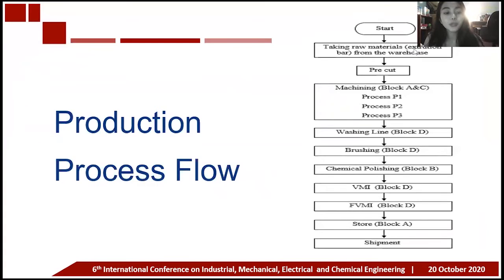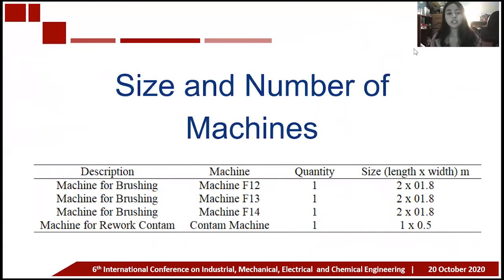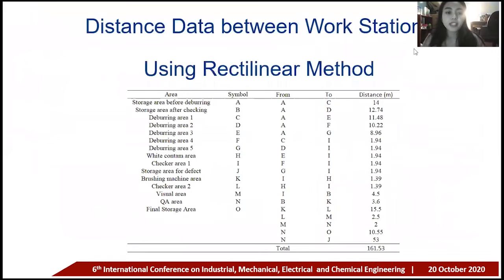This is the initial layout planning of the company before redesign, followed by the production process flow. The process starts with taking raw materials from the warehouse, then pre-cut, machining, washing line, brushing, chemical polishing, VMI, FVMI, store, and finally shipment. This is the production process flow in the brushing area itself. The table shows the size and number of machines at each station in the brushing area — there are two kinds: machines for brushing and machines for rework.